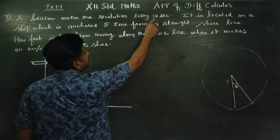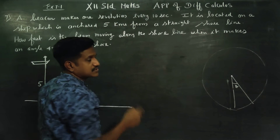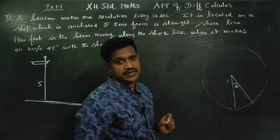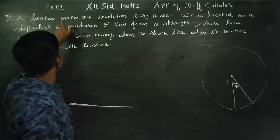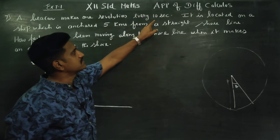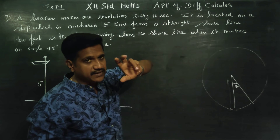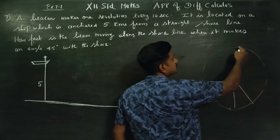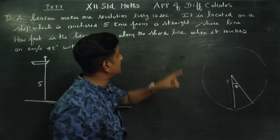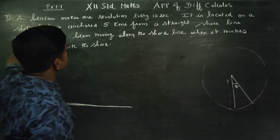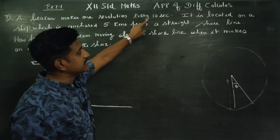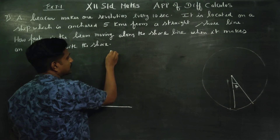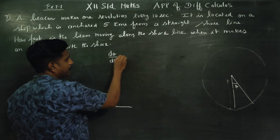The beacon makes one revolution every 10 seconds — this gives us a rate of change. The rate of change of this angle is dθ/dt. The rate of change is the angular change.